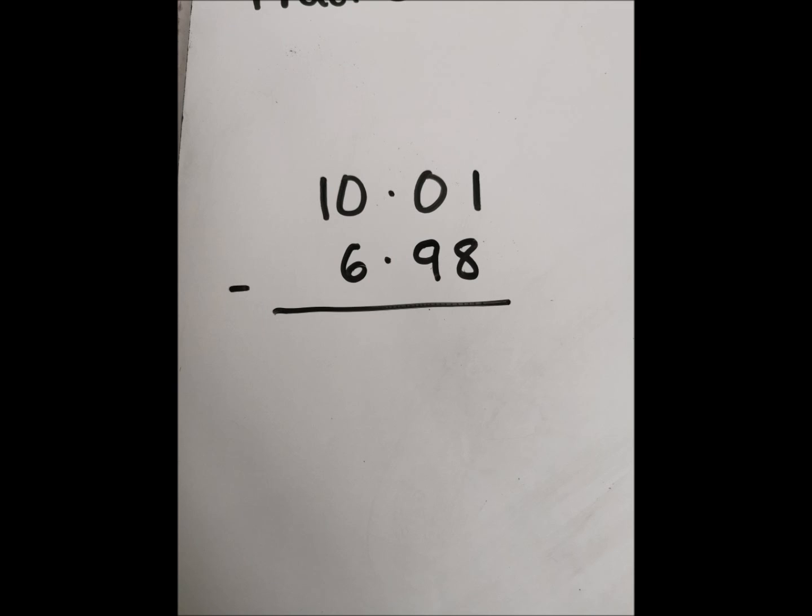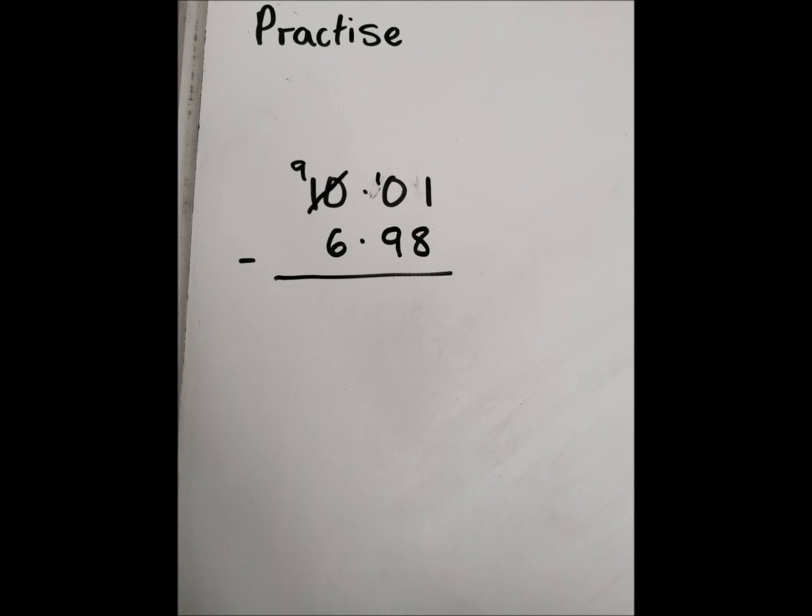Starting in the hundredths column, we've got 1, take away 8. So, we need to borrow, but already we can see that there's nothing in the tenths column, or even in the units column, for us to borrow. So, we have to go all the way to the tens column to borrow. So, we borrow from the ten and make it nine. Then we can move 1 over into the tenths column to make that a ten.